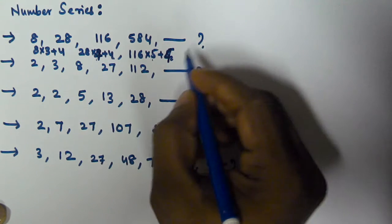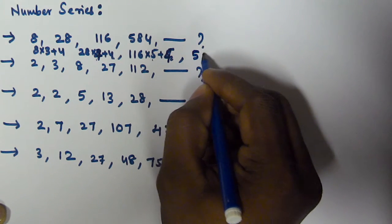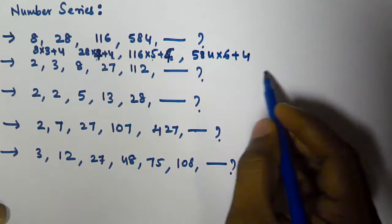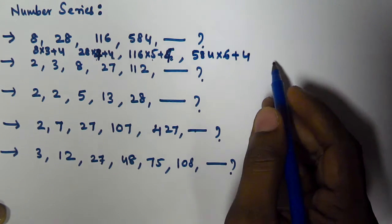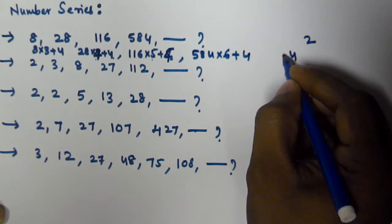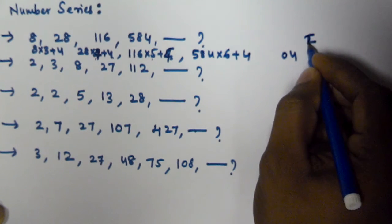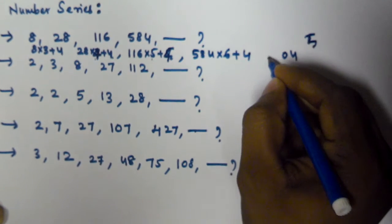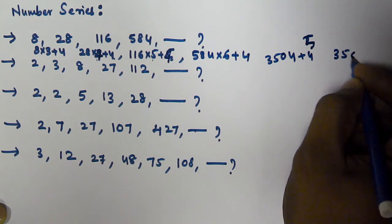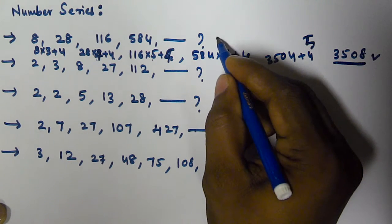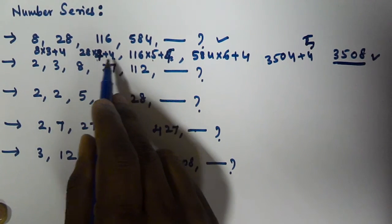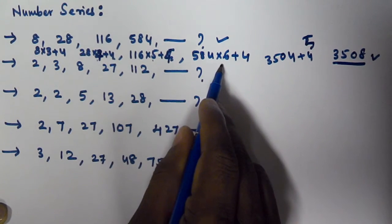So the next term is 584 times 6 plus 4. 6 times 4 is 24, 6 times 8 is 48, giving 3504, and plus 4 is 3508. The next term in the series is 3508. The pattern is multiplying by 3, 4, 5, 6 and always adding 4.